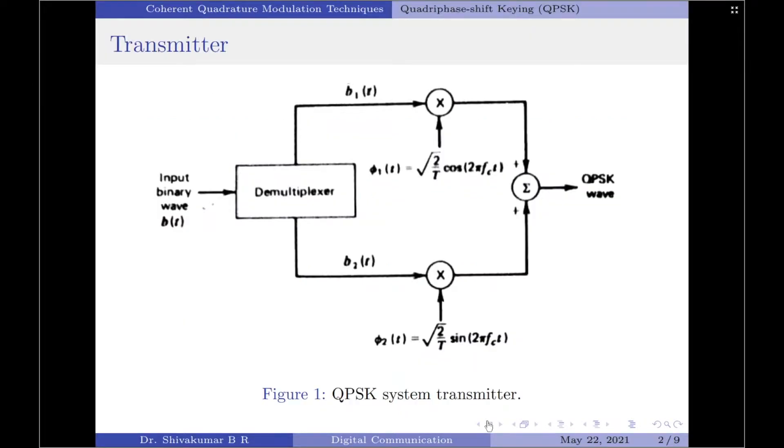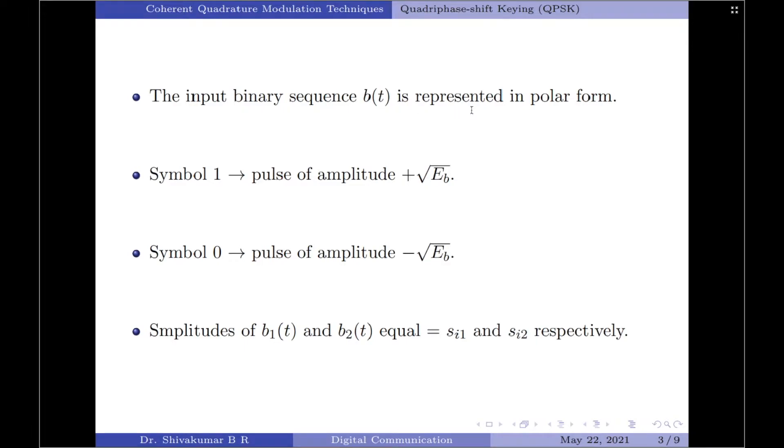Figure 1 here shows the block diagram of a typical QPSK transmitter. The input binary sequence b(t) is represented in its polar form. Please note, the sequence b(t) should be represented in its polar form.